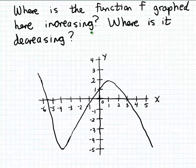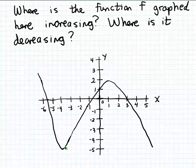Let's start by first trying to determine where the function f is increasing. If we think of moving from left to right along the x-axis — in other words, the inputs increasing — we can see that the outputs will begin increasing right around the input minus 4, because that's where the graph begins to rise. To the left of minus 4, as you move from left to right, notice the graph is falling, meaning the outputs are decreasing. But after minus 4, as the inputs are increasing, the graph is rising and the function f begins to increase right at the input minus 4.